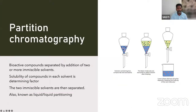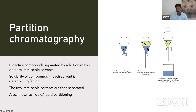The next method is partition chromatography. Bioactive compounds present in the extract are separated by addition of two or more immiscible solvents. Solubility of compounds in each solvent is the determining factor. The two immiscible solvents are then separated — also known as liquid-liquid partition. When you add the other solvent and shake vigorously, the compound that is readily soluble in the second solvent moves from one phase to the other, and then both solvents are separated by draining so the molecules can be isolated.